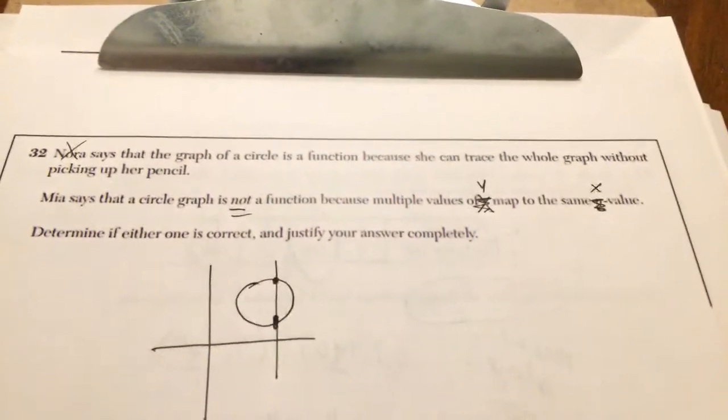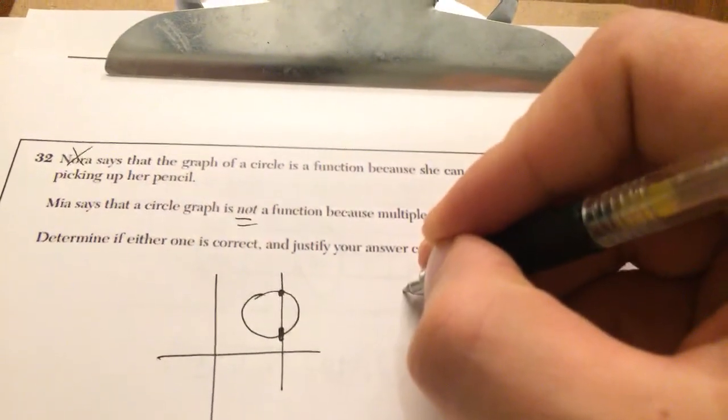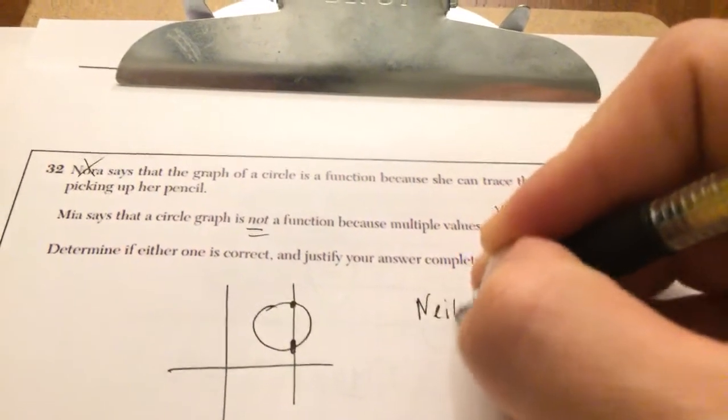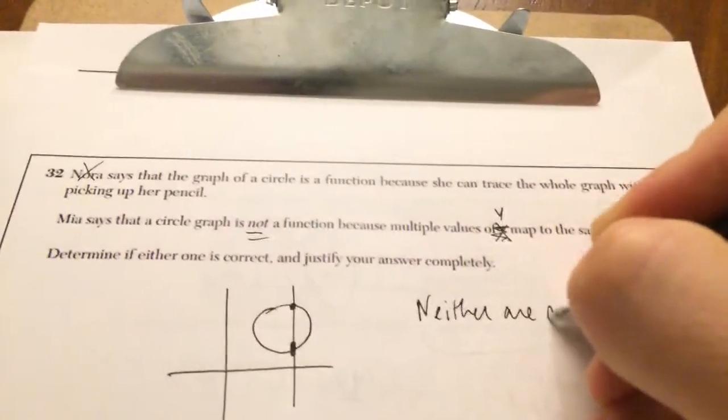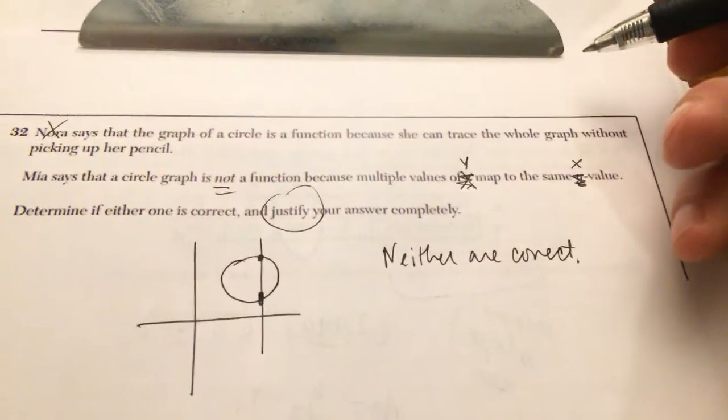So, determine if either one is correct. Neither are correct. When it says justify, you want to give some type of explanation. This diagram can certainly be a counter example for Nora. You could say counter example for Nora.